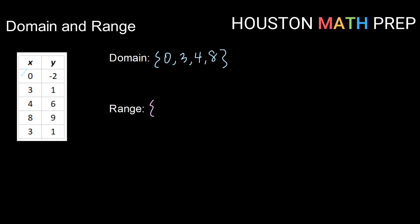Doing the same thing for range, I'm going to go through and list all the values. If something is repeated, I'm only going to list it once. So -2 is a possible y value, 1, 6, 9, and 1 I already have in my list. So I won't list it again. So my range or my possible output values are -2, 1, 6, and 9.